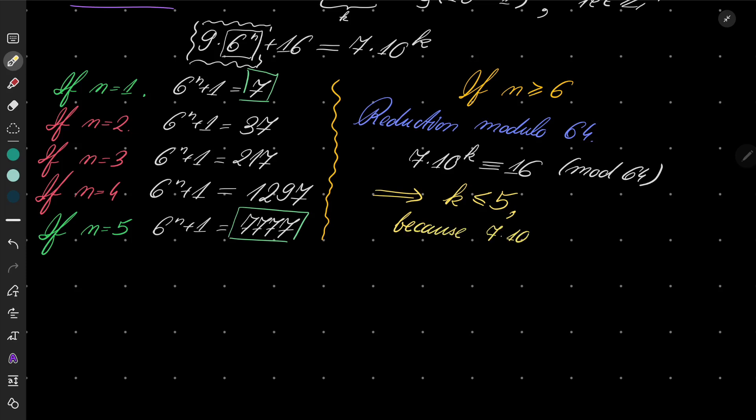Because 7 times 10 to the power of k is congruent to 0 modulo 64 for k greater than or equal to 6. Because 10 to the power of 6 has as its factor 2 to the power of 6, and that's 64.